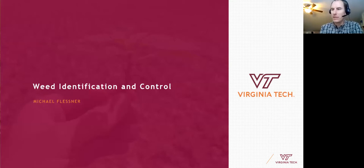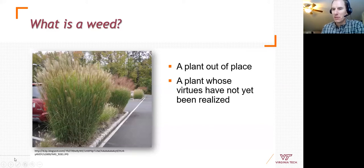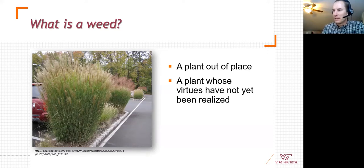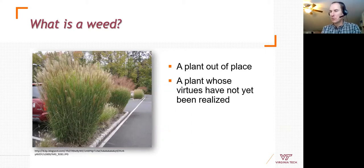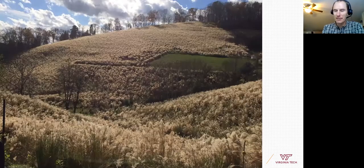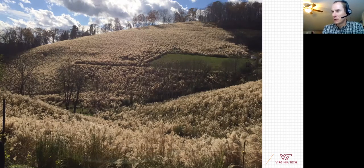Now into weed identification and control. What is a weed? If you don't want a plant there, it's a weed — a plant out of place. This photo shows miscanthus or Chinese silver grass, widely planted as an ornamental. In a parking lot it looks attractive, but if it blocks your view while pulling out, or escapes into a pasture in Lee County in far southwest Virginia, it becomes a real problem — reducing grazable area and utility.